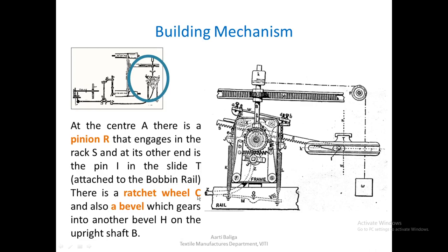There is a ratchet wheel — this is the first wheel we can see. Behind it, pinion R is there, along with another bevel that engages with the upright shaft via another bevel H. On this upright shaft there is a pinion U which drives a rack, and this rack is what shifts the cone drum belt.